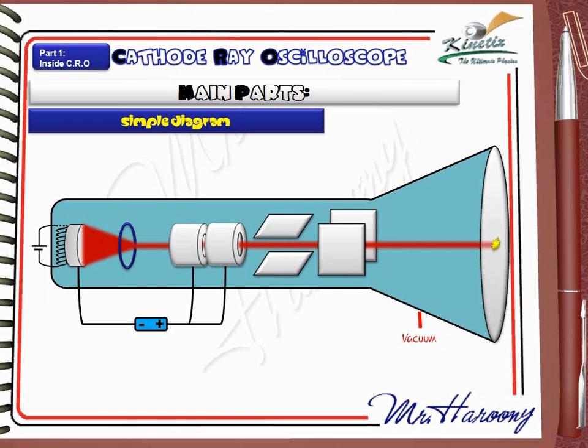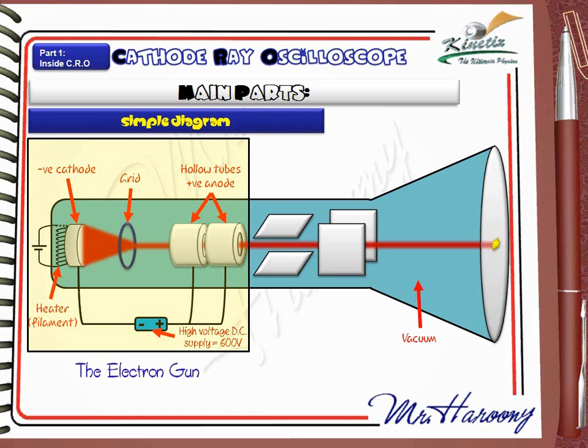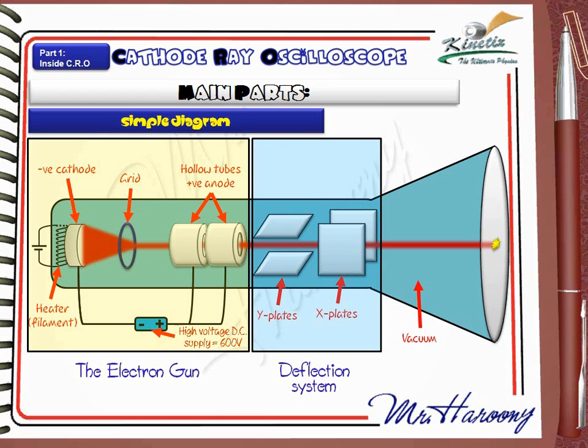All the apparatus are placed in a vacuum tube. Starting from left, the labels are the heater or the filament, the cathode, the grid, the two hollow tube anodes, the high voltage DC supply, and all these parts form the electron gun, the Y plates, and the X plates. And these will form the deflection system. The last part is the fluorescent screen. This is how you will draw and label the parts of the cathode ray oscilloscope.